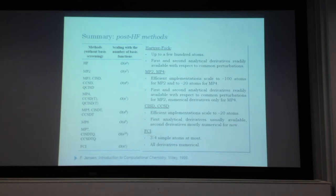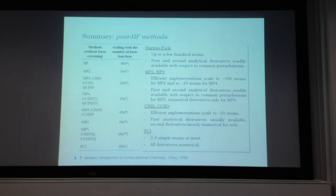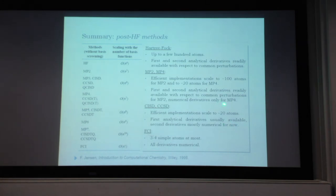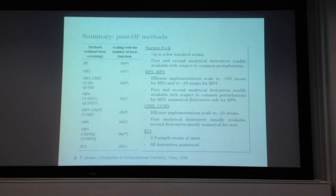Møller-Plesset perturbation theory—MP2—scales to about 100 atoms and MP4 to about 20 atoms in efficient implementations. For MP2, both first and second derivatives are available, so geometry optimization proceeds quickly. For MP4, derivatives are usually numerical, requiring a forward and backward step for every coordinate using central difference formulas, which is very time-consuming.